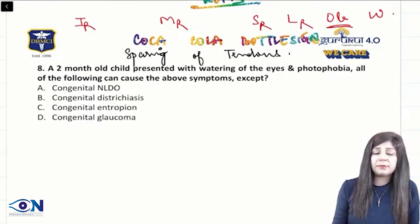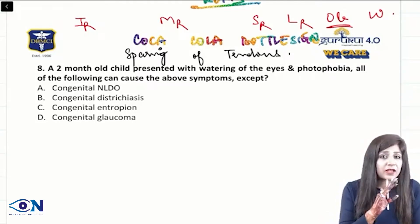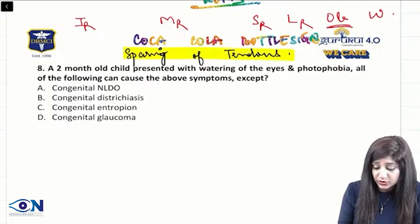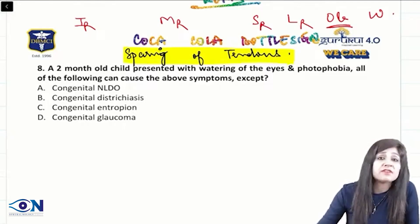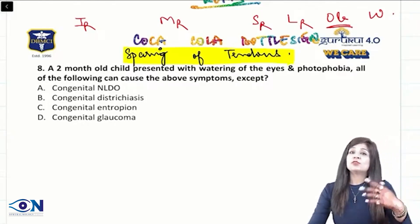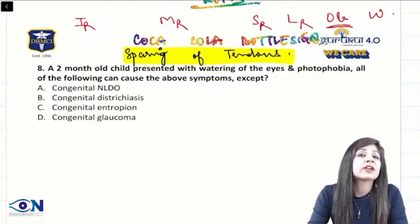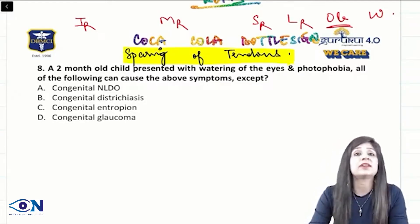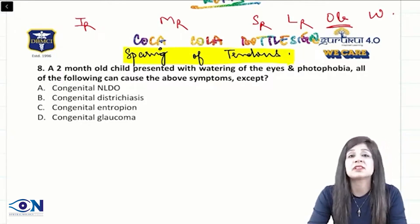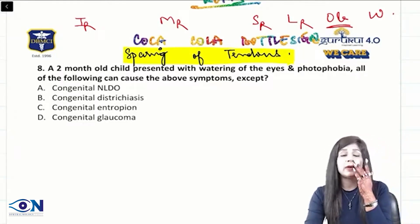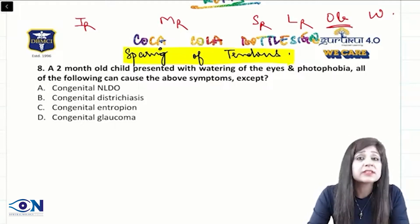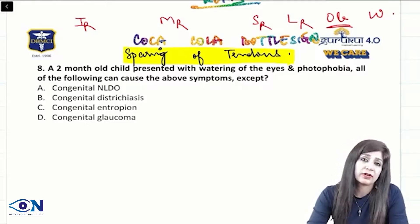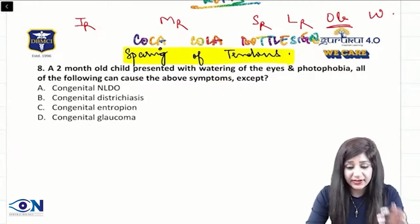On imaging, there is sparing of the tendons — the origin and insertion parts are not involved in thyroid eye disease. This sparing of tendons is a very important diagnostic clue. So the key features for diagnosis are: sparing of tendons, fibrosis of muscles, restrictive squint, smoking history, female sex, middle age, and thyroid status. Once the diagnosis is confirmed, answering questions about signs and treatment is straightforward.